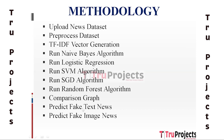To implement this project we have designed the following modules. The first module is Upload News Dataset. The project starts by uploading a dataset containing news articles along with their labels indicating whether each news piece is fake or genuine. The dataset contains a mixture of both fake and real news articles, which will serve as the basis for training and evaluating the machine learning models.